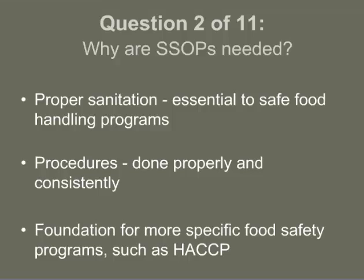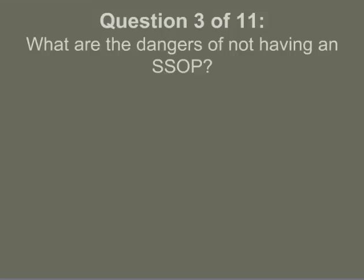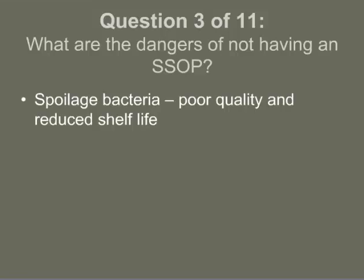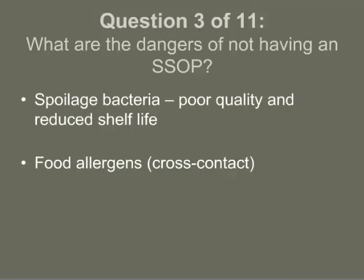SSOPs are part of the foundation for more specific programs such as HACCP. You can't control a specific hazard with a HACCP plan if you have a facility that can't ensure something as basic as good sanitation. Food equipment that isn't properly cleaned and sanitized can leave spoilage bacteria that at a minimum can cause poor quality product and reduce shelf life, but control of food allergens is also an emerging risk in food processing operations. If a food contact surface is not properly cleaned between handling different kinds of foods, food proteins can be carried over to the next food — we call that cross contact.